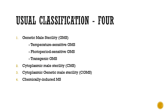Apart from the classification given by Carl in 1998, the more widely accepted classification of male sterility is as follows. The first is genetic male sterility or GMS, which can be further divided into three types: temperature-sensitive GMS, photoperiod-sensitive GMS, and transgenic male sterility. The second classification is cytoplasmic male sterility, the third is cytoplasmic genetic male sterility, and fourth is chemically induced male sterility.